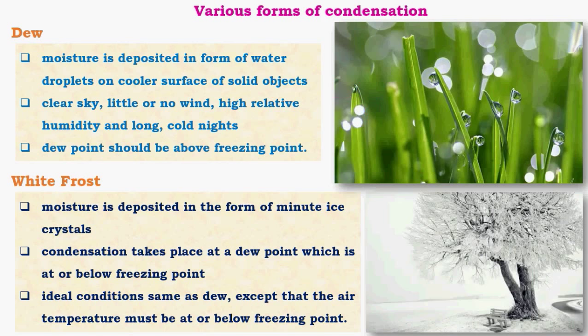White frost is the counterpart of dew which occurs below freezing point. The only difference between white frost and dew is that white frost occurs below freezing point and dew occurs above freezing point. The ideal conditions are the same as dew except that air temperature must be at or below freezing point. Moisture is deposited in the form of minute ice crystals, and condensation takes place at a dew point which is at or below freezing point.